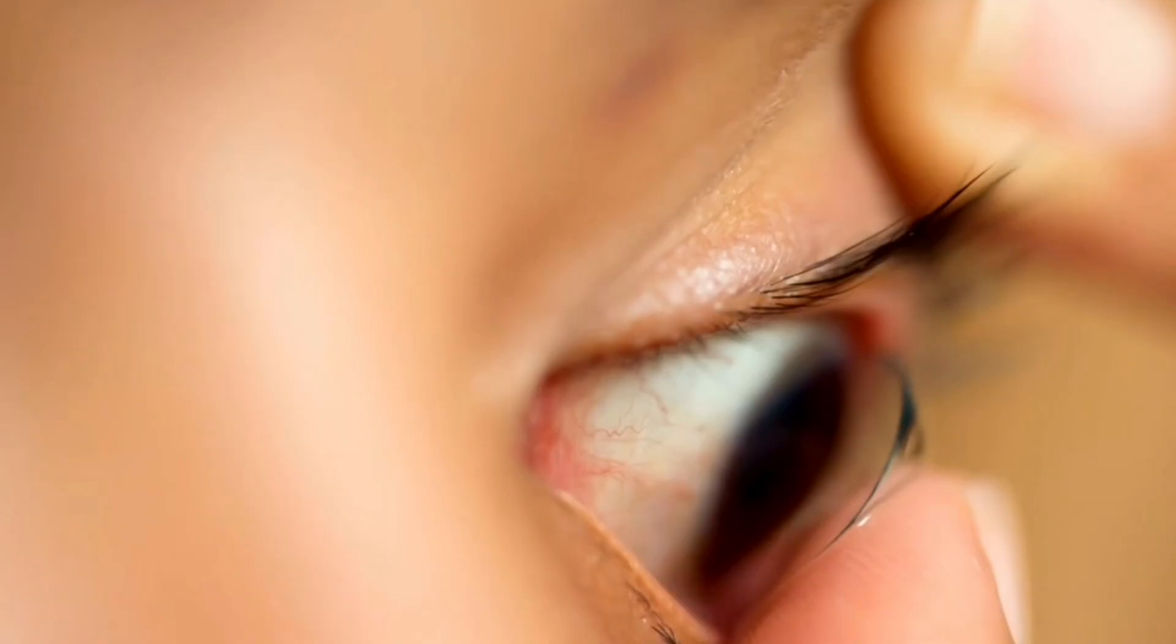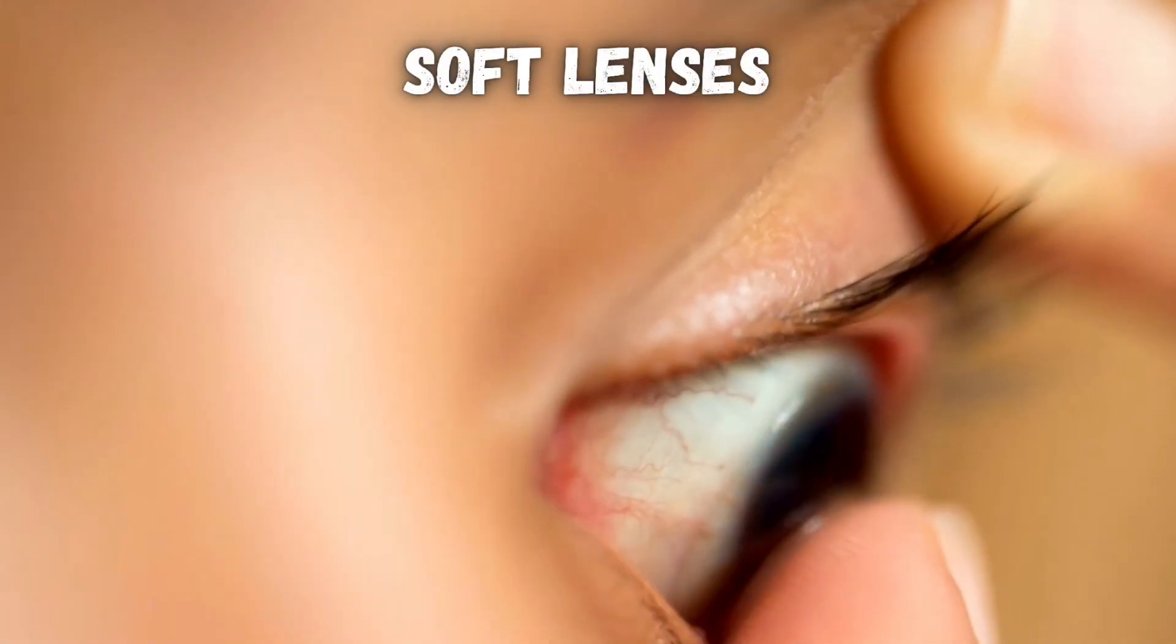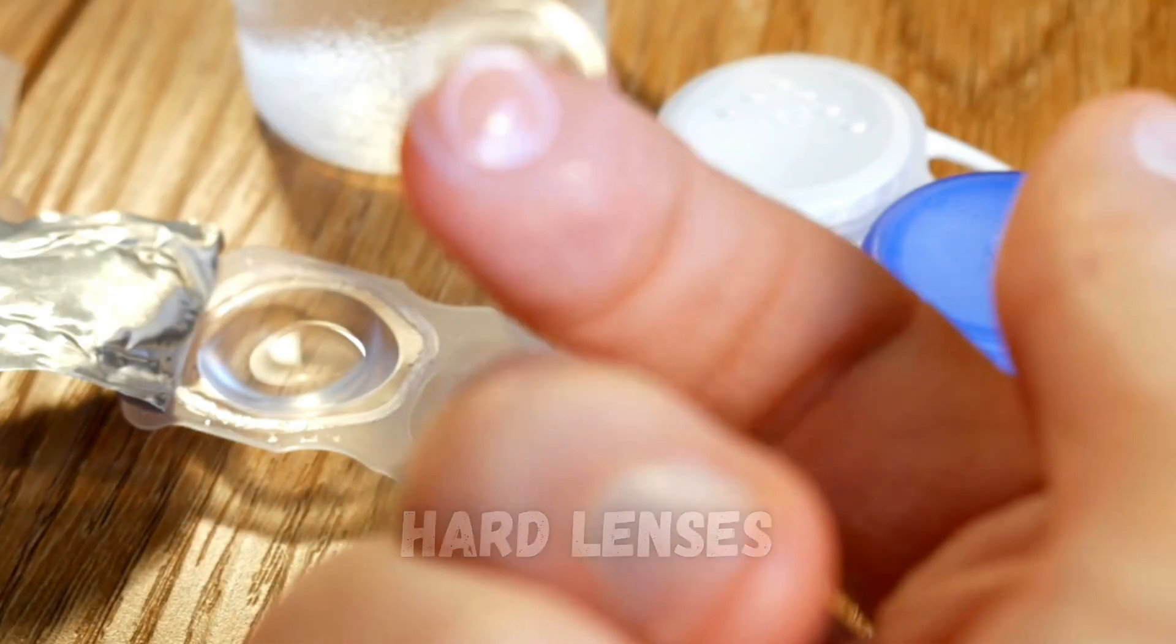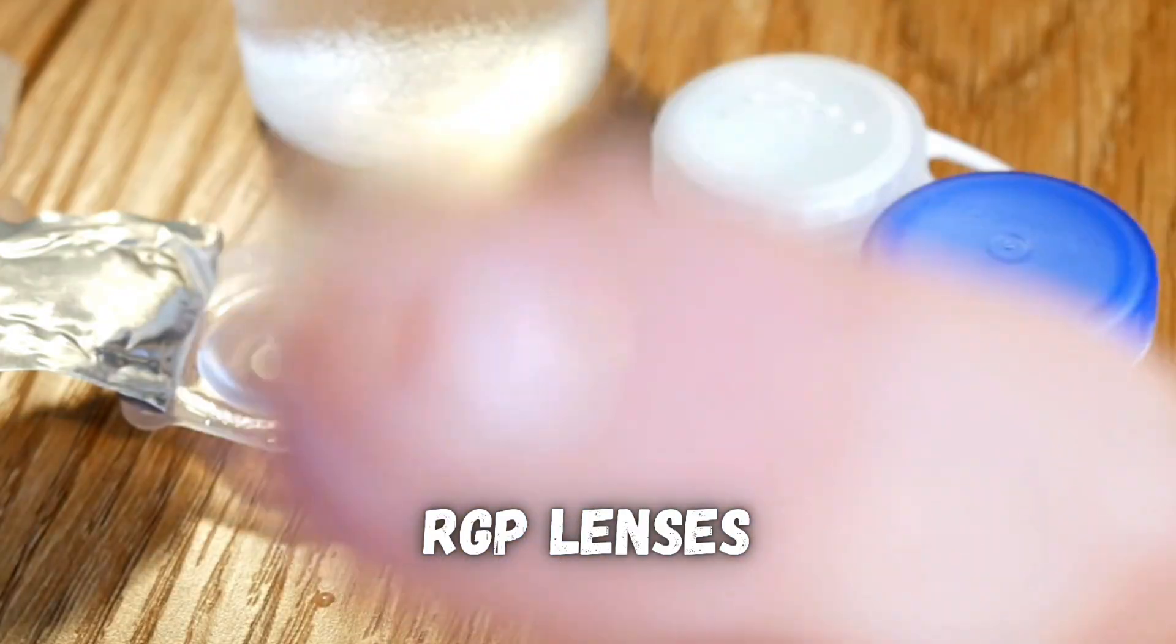There are two types of contacts: soft flexible lenses and hard lenses, also known as rigid gas permeable lenses.